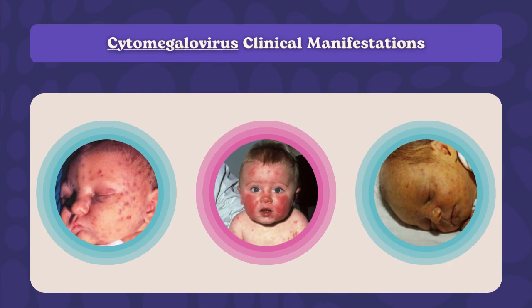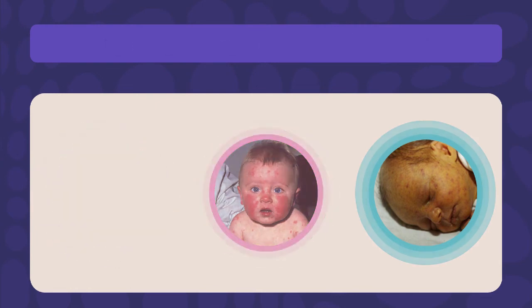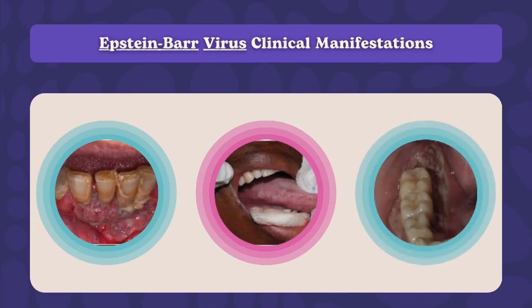Cytomegalovirus (CMV) and the Epstein-Barr virus (EBV) both manifest flu-like symptoms. CMV is widespread and generally harmless, but remains in the body for life. Symptoms include muscle aches, fever, skin rash, sore throat, and swollen lymph nodes. EBV, commonly known as human herpesvirus 4, frequently occurs in children and may be asymptomatic or present like transient childhood diseases. Its symptoms are similar to CMV, though the infected person is most likely to have a swollen liver and enlarged spleen.